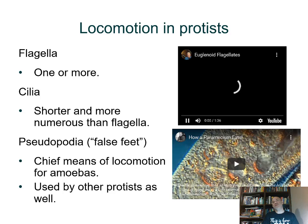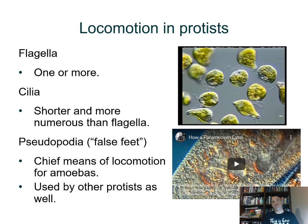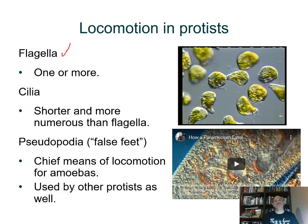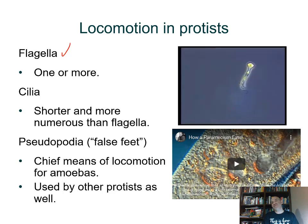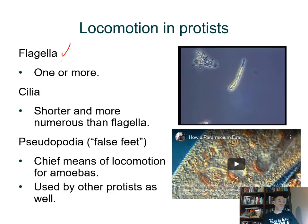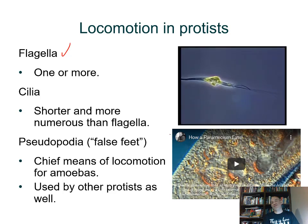As for locomotion, protists have a variety of ways of moving. The first type uses flagella — just like flagella in sperm. The particular organism shown in the video are euglenoids, and they also move their cytoplasm around. You can see the little flagella moving out in front, pulling them through the water.